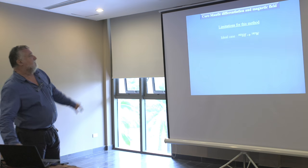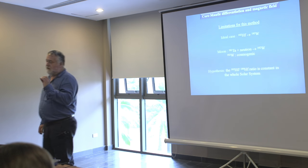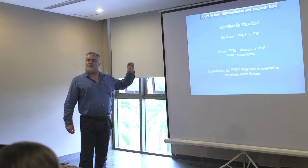There are some limits for this method. On the Moon, ¹⁸¹Ta plus neutrons can produce ¹⁸²W, meaning there is some ¹⁸²W of cosmogenic origin. Also, this method assumes that the ¹⁸²Hf/¹⁸⁰Hf ratio is constant in the solar system — a reasonable assumption, but still an assumption. So the age of 30 million years carries a wide probable error. But what is true is that this event took place extremely early — less than 60 million years after the beginning of the solar system.